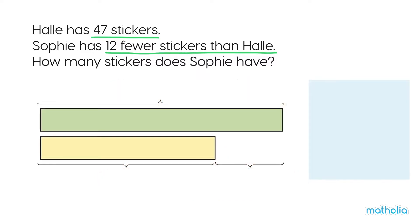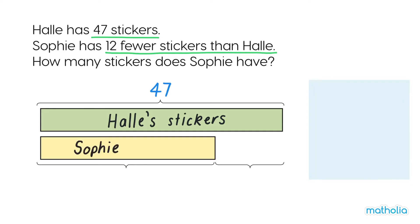Let's use a bar model to help find the answer. We can represent Hallie's stickers as the green bar. Write 47 here and label the bar. We know Sophie has 12 fewer stickers, so we can show her stickers using the shorter yellow bar. Let's label it now. Label the difference as fewer and write 12 here.